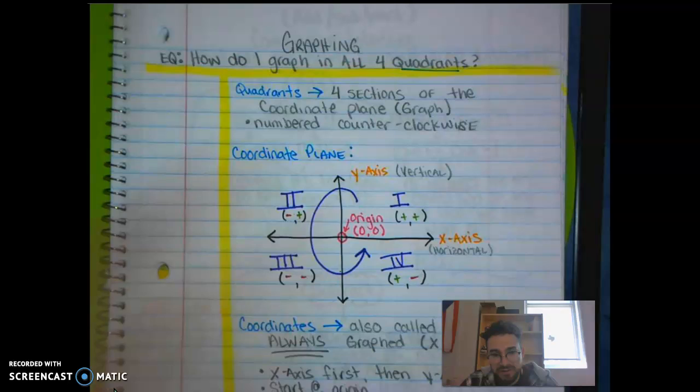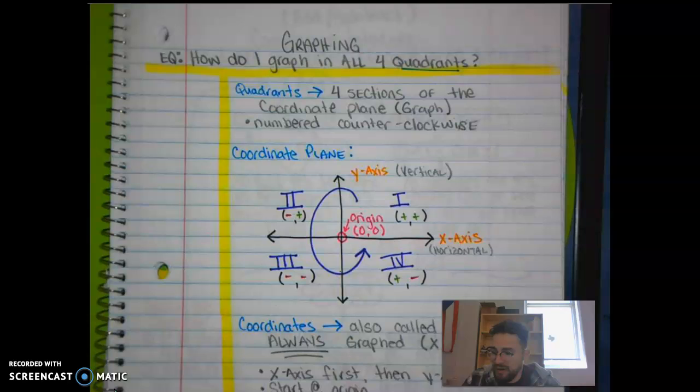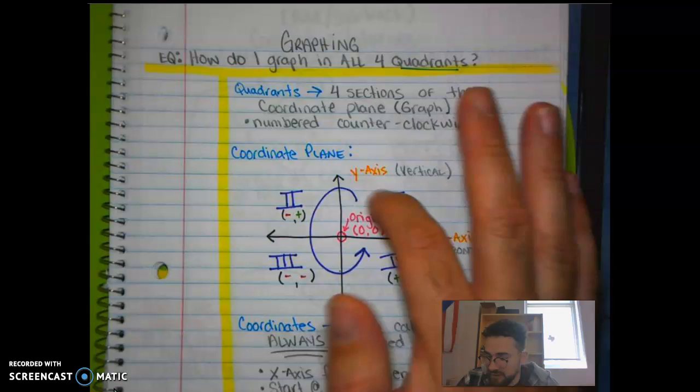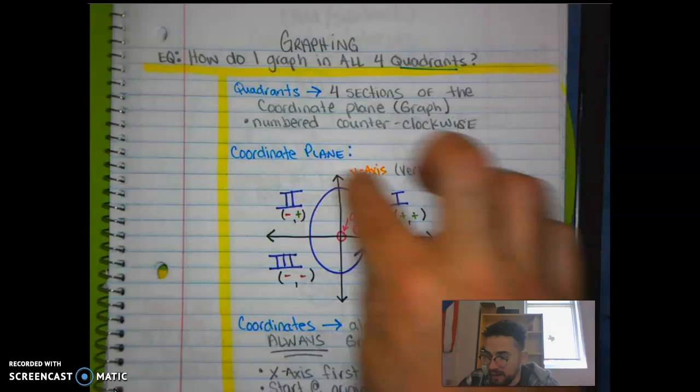So real quick, just going to spend twenty or thirty seconds going over these notes. Remember that when we are talking about the coordinate plane, that is where we graph and there are four sections to the coordinate plane. I'm going to get a little bit more into this in the next video, but really what I want you to understand is that there are four quadrants that are numbered in counterclockwise form.